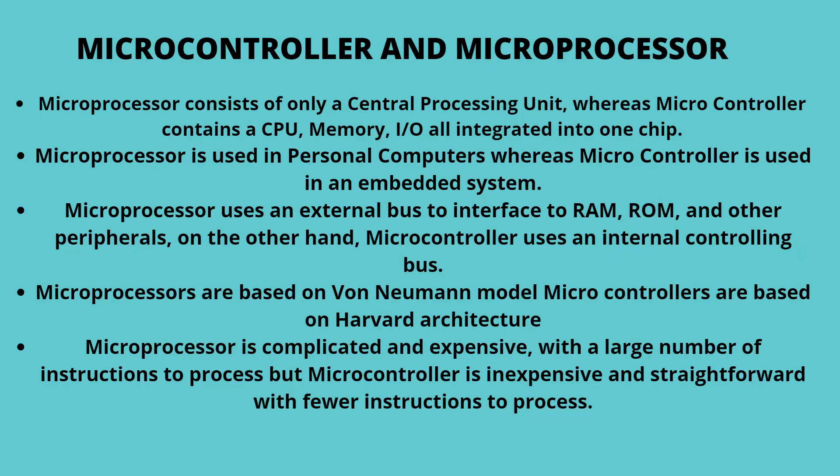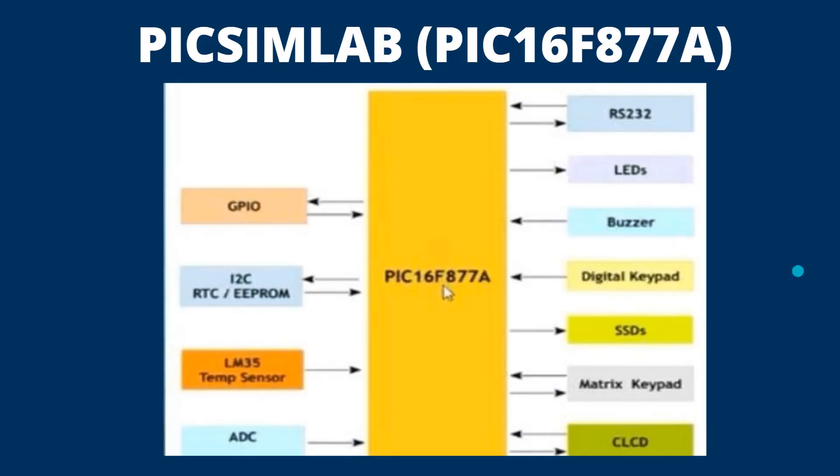Moving ahead, what is the difference between a microcontroller and a microprocessor? A microprocessor is used in personal computers, whereas a microcontroller is used in an embedded system. A microprocessor uses an external bus to interface RAM, ROM, or other peripherals, while a microcontroller uses an internal controlling bus. Now we will see the architecture of the 16F877A microcontroller.